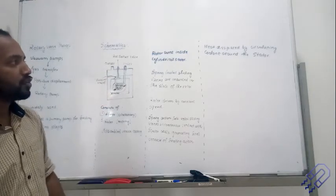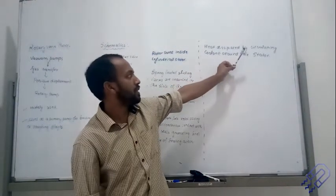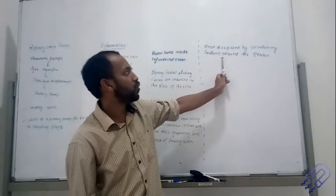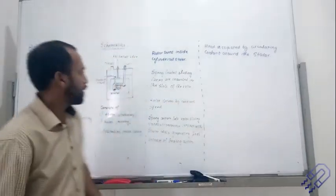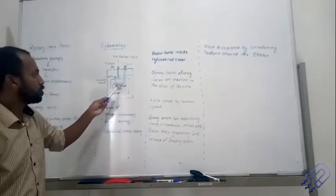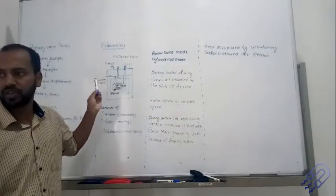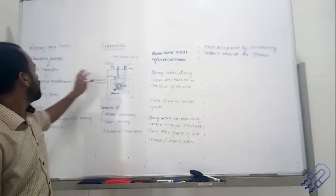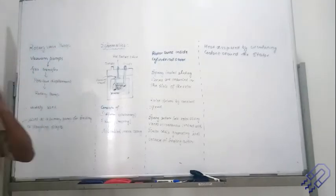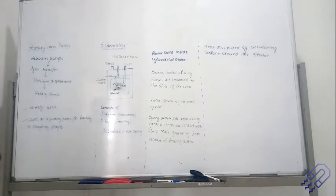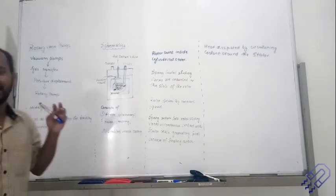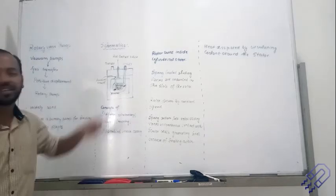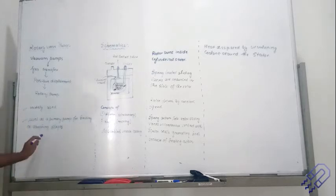The heat is dissipated by circulating coolant around the stator. In a normal rotary pump, some oil is also used. Because the rotor is not rotating at a very high speed, it does not generate too much heat — which is also why we call it a roughing pump.